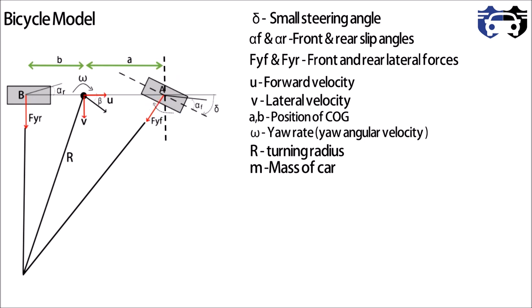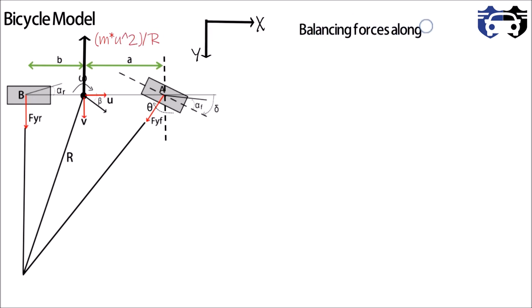Here I'm considering that Fyf is vertical. While turning, the center of gravity is acted by the centrifugal force which is given by m*u^2/R. Now balancing all the forces along the Y-axis we get Fyf + Fyr = m*u^2/R.